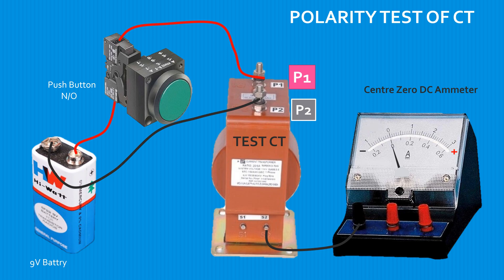Connect the S1 terminal of the test CT to the positive terminal of the center-zero analog DC ammeter. Now the test setup is completed.